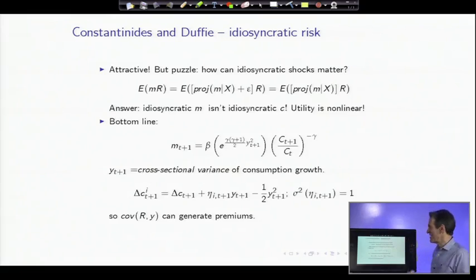So here's the bottom line of the Constantinides and Duffie model. The discount factor is once again consumption growth to a minus gamma. We're still going to use power utility functions; we're just going to give people idiosyncratic risks. But then another term. Once again, we have another term multiplying the consumption growth term. Here it is: gamma times gamma plus 1 over 2, times Y_{t+1} squared, which is the cross-sectional variance of consumption growth.